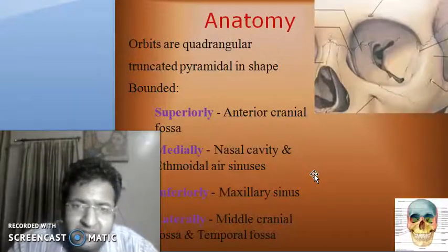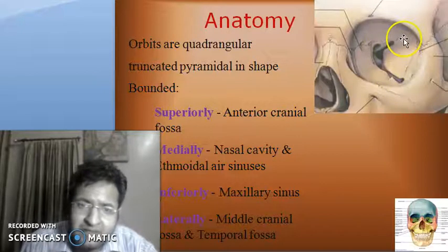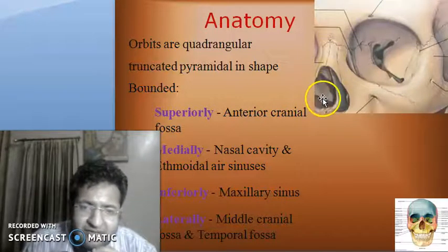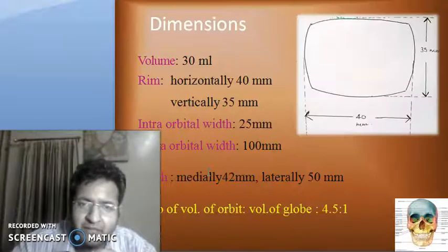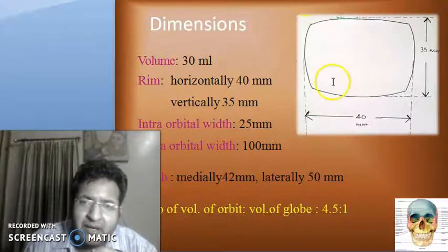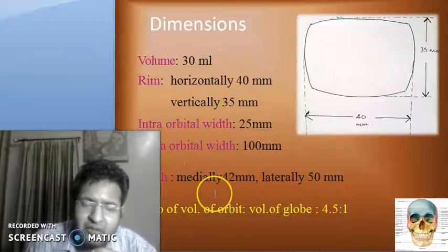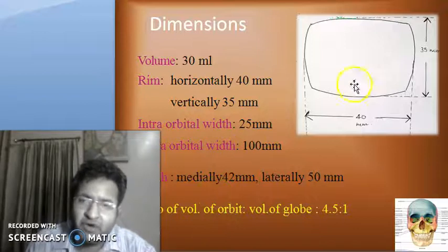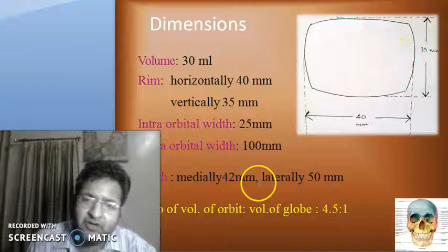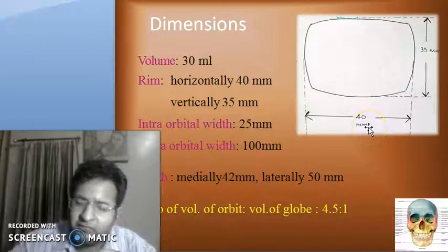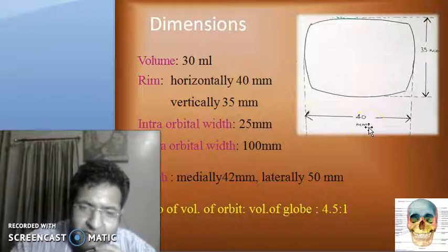The orbits are quadrangular truncated pyramids bounded superiorly by the anterior cranial fossa, medially by the nasal cavity and ethmoidal sinuses, inferiorly by the maxillary sinuses, and laterally by the middle cranial fossa and the temporal fossa. The dimensions: volume is 30 mL, the orbital rim is horizontally 40 mm and vertically 35 mm, the intraorbital width is about 25 mm, the medial wall depth is 42 mm, and the lateral wall depth is 50 mm. The ratio of orbit volume to globe volume is 4.5 to 1.